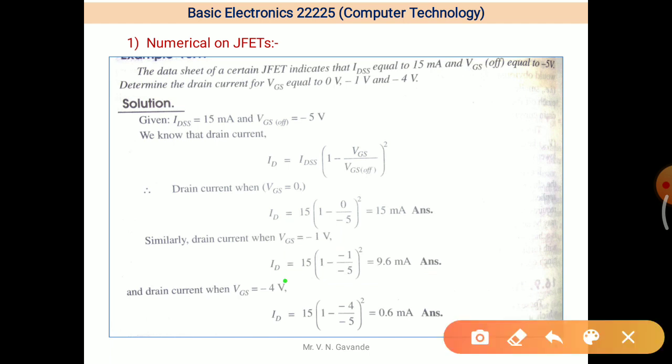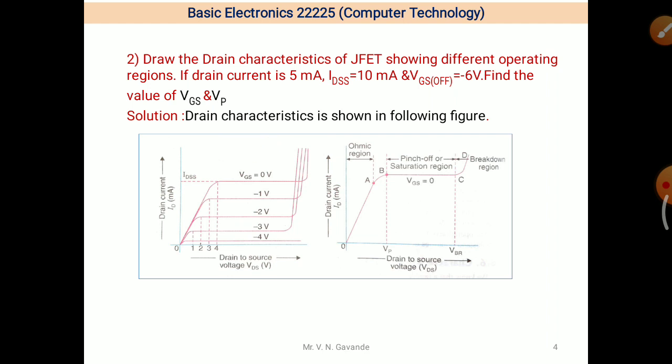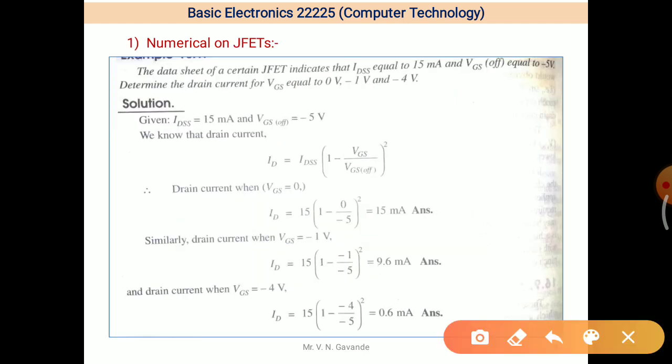Now for third value of VGS minus 4, ID is equal to 15, 1 minus minus 4 divided by minus 5 bracket square and it is 0.6 mA. In this case we want to find out values of ID: ID for VGS 0, then ID for VGS minus 1, then ID for VGS minus 4.